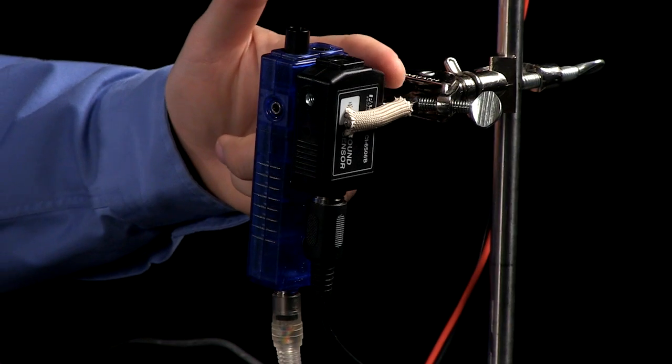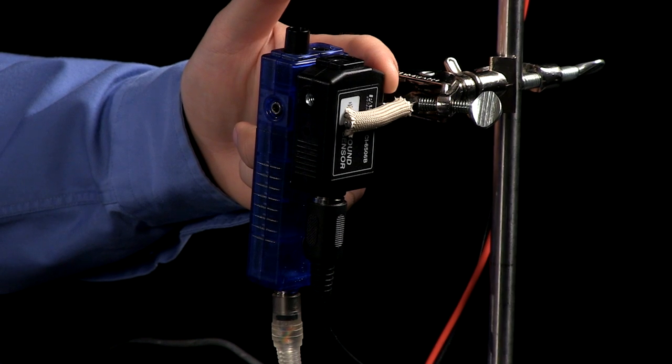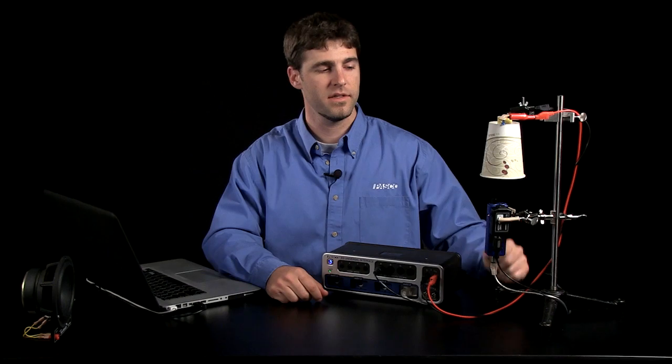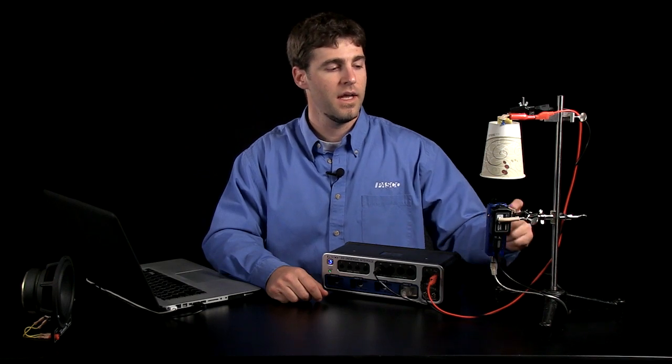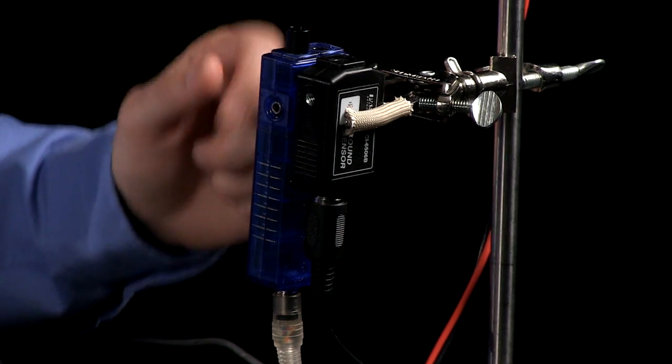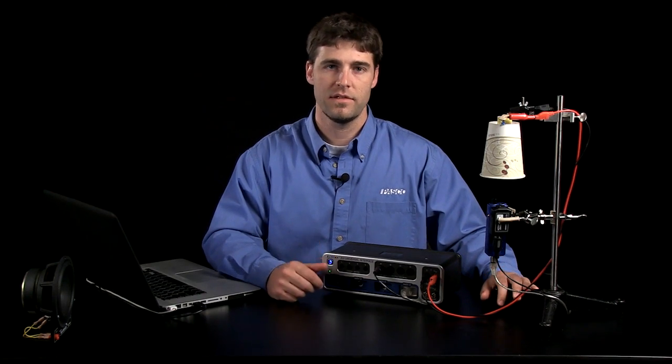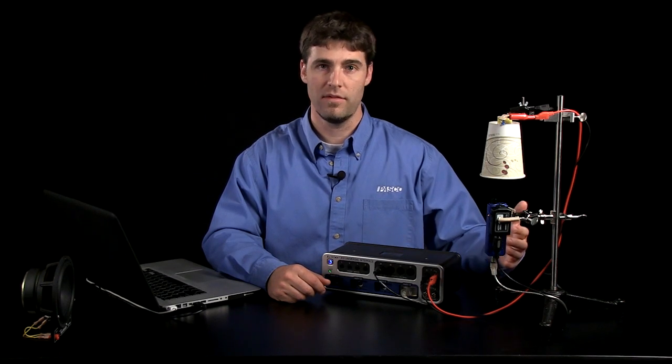To do this I'll be using two sensors. The first is a black Science Workshop sound sensor. We'll be using that sensor to measure the output frequency from the speaker, and the second is a blue Passport temperature sound level light sensor. This sensor is going to be used to measure the output sound level from the speaker.